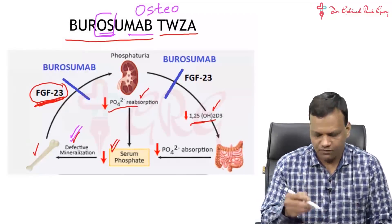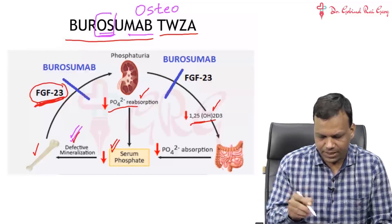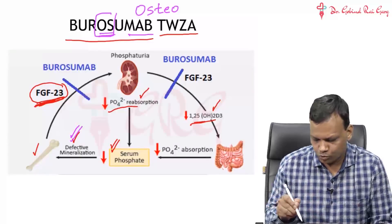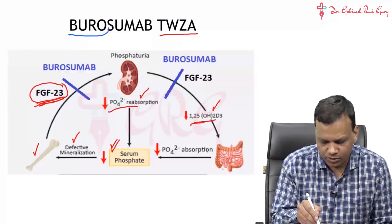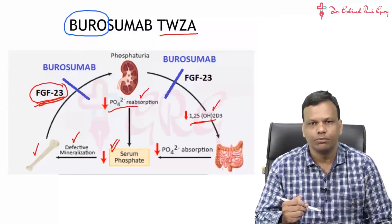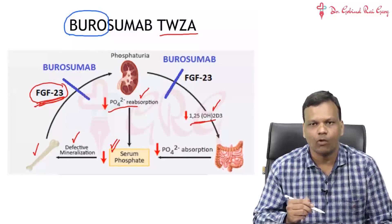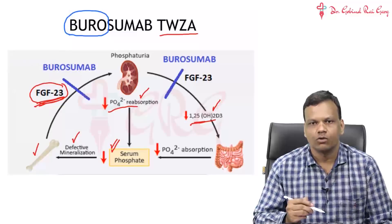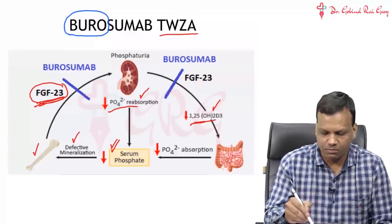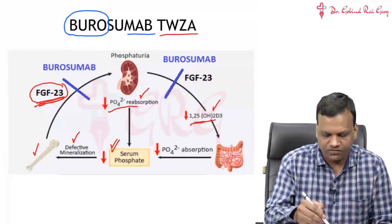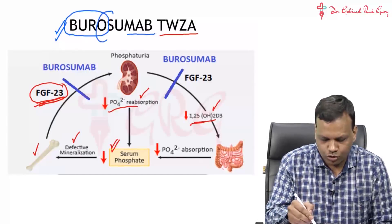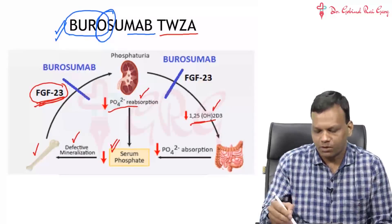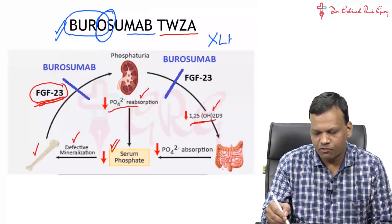This can also be remembered from the beginning of the name: Burosumab. If you read 'buro', it looks like 'bro', and buro means fibro — so it is acting on fibroblast growth factor 23. So Burosumab is a monoclonal antibody against fibroblast growth factor 23, used for an osteo, meaning bone, problem. The problem is X-linked hypophosphatemia.